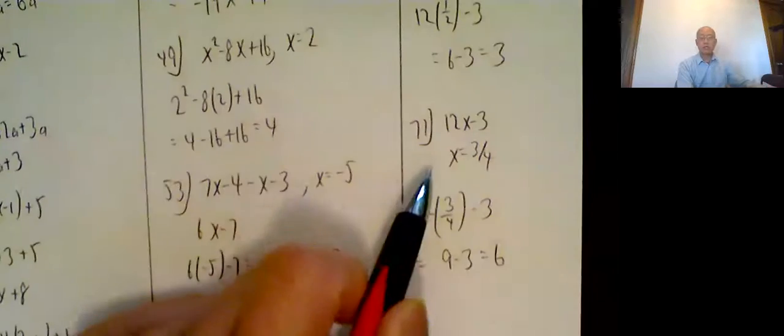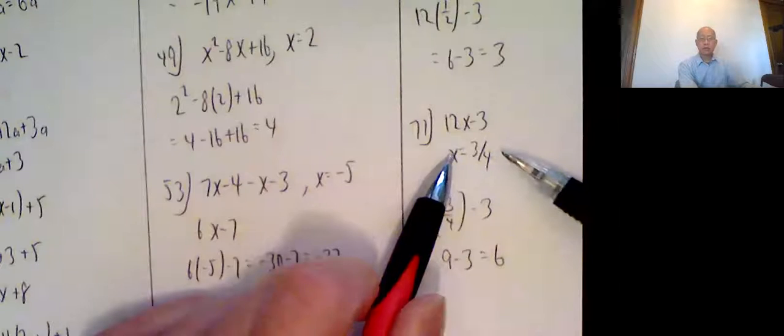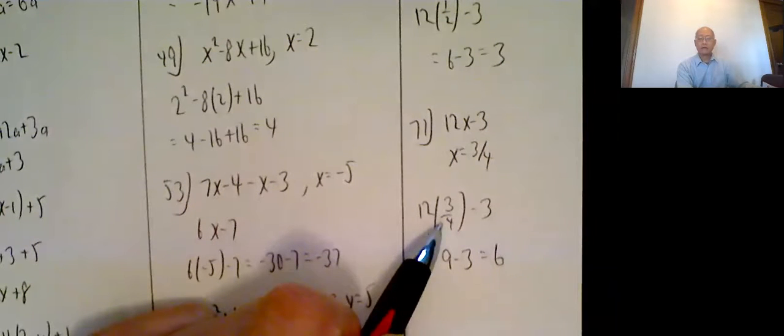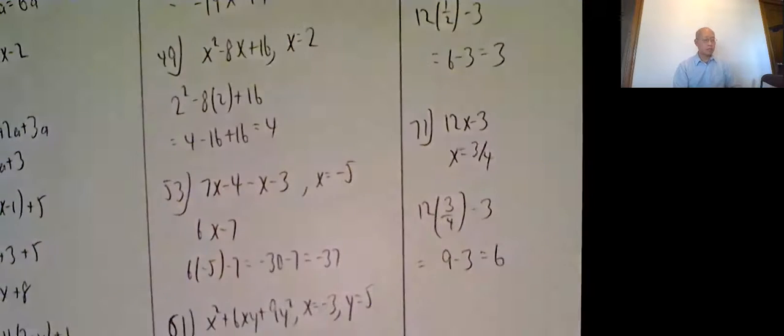And finally, 71. Same thing. They want you to plug in 3 fourths. So 12x minus 3. Plug in 3 over 4. 12 times 3 fourths minus 3. 12 divided by 4 is 3. 3 times 3 is 9. 9 minus 3 is equal to 6.